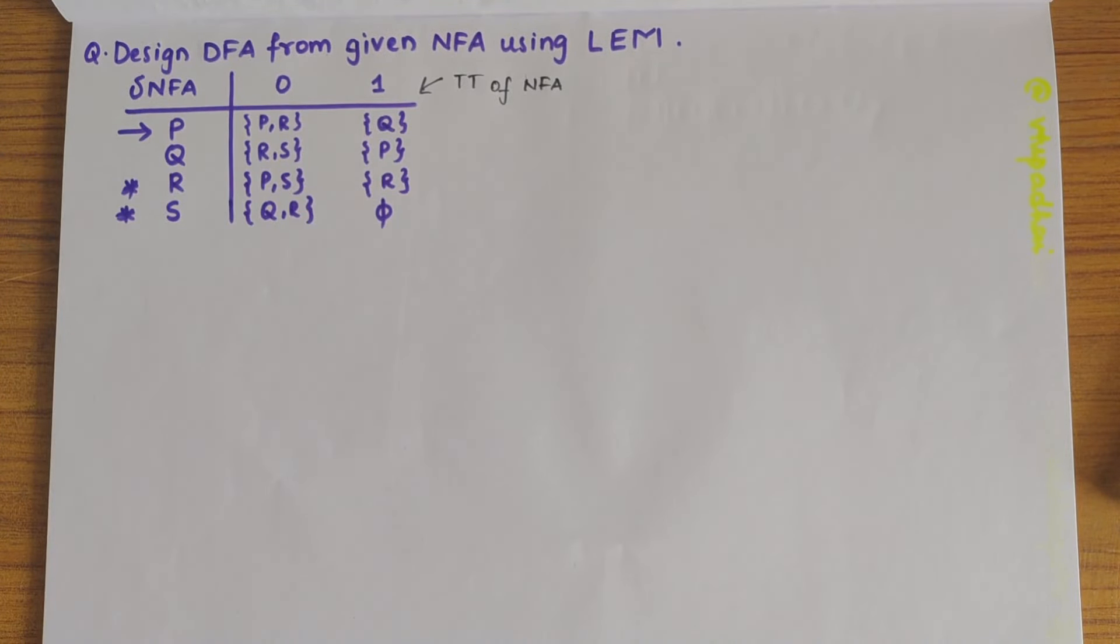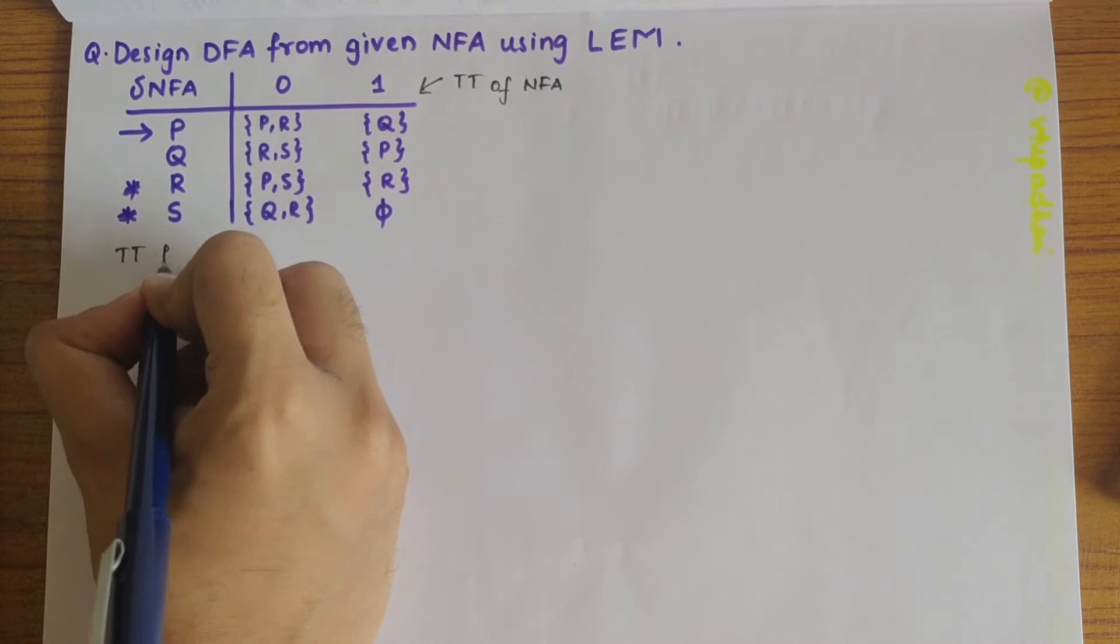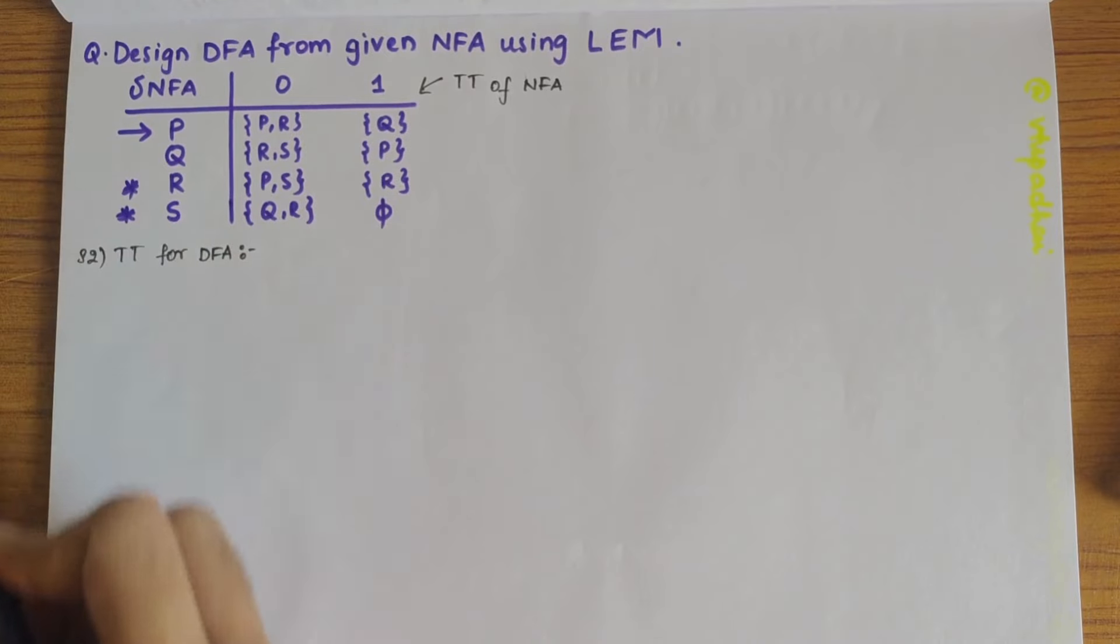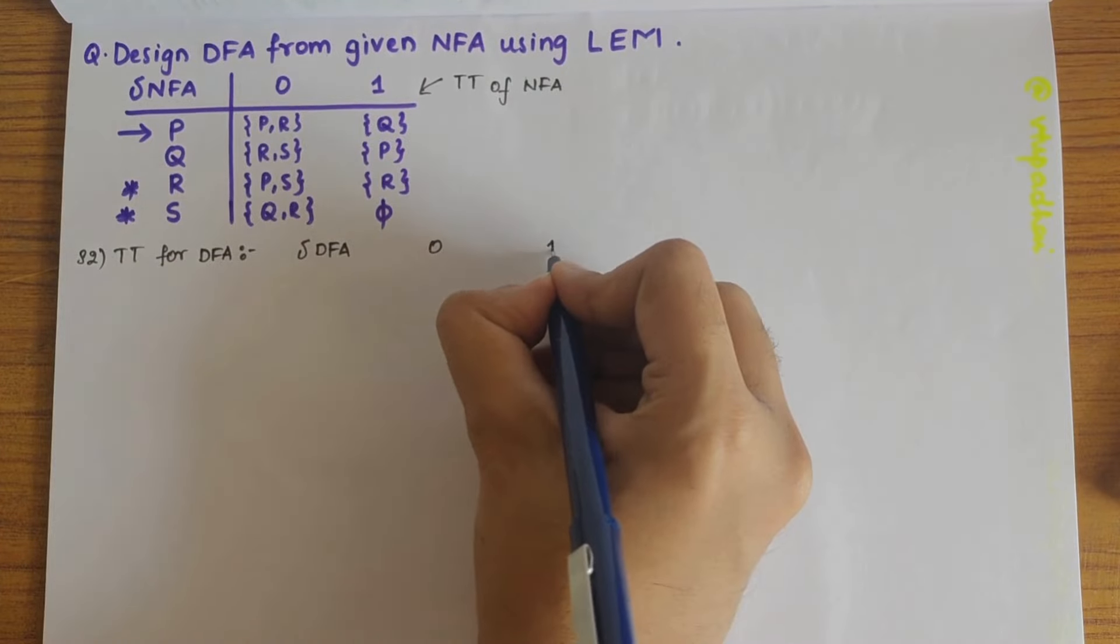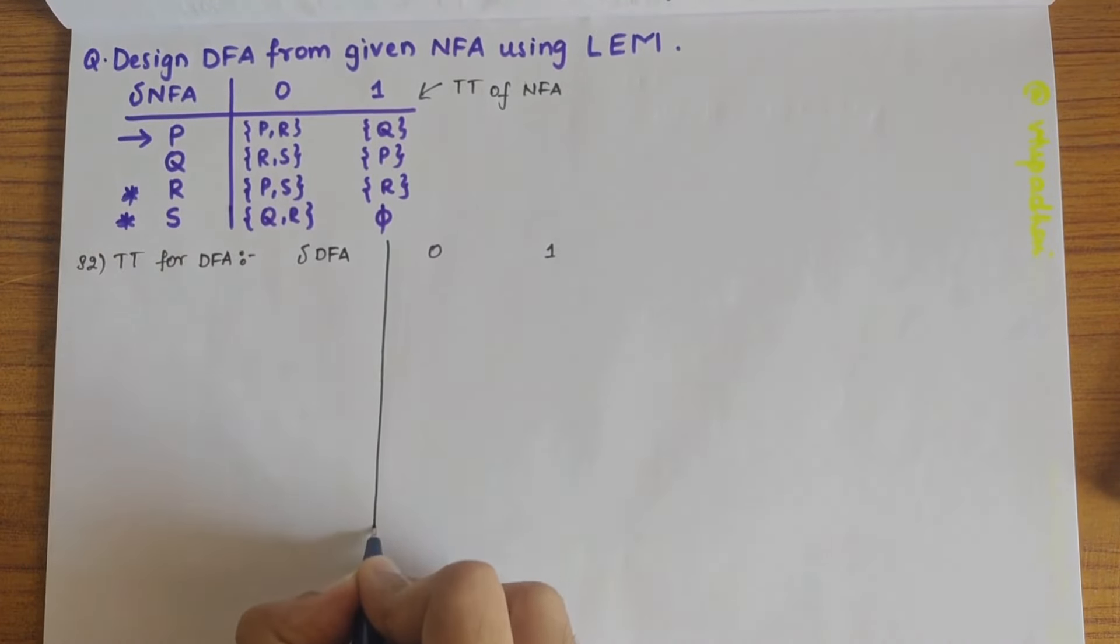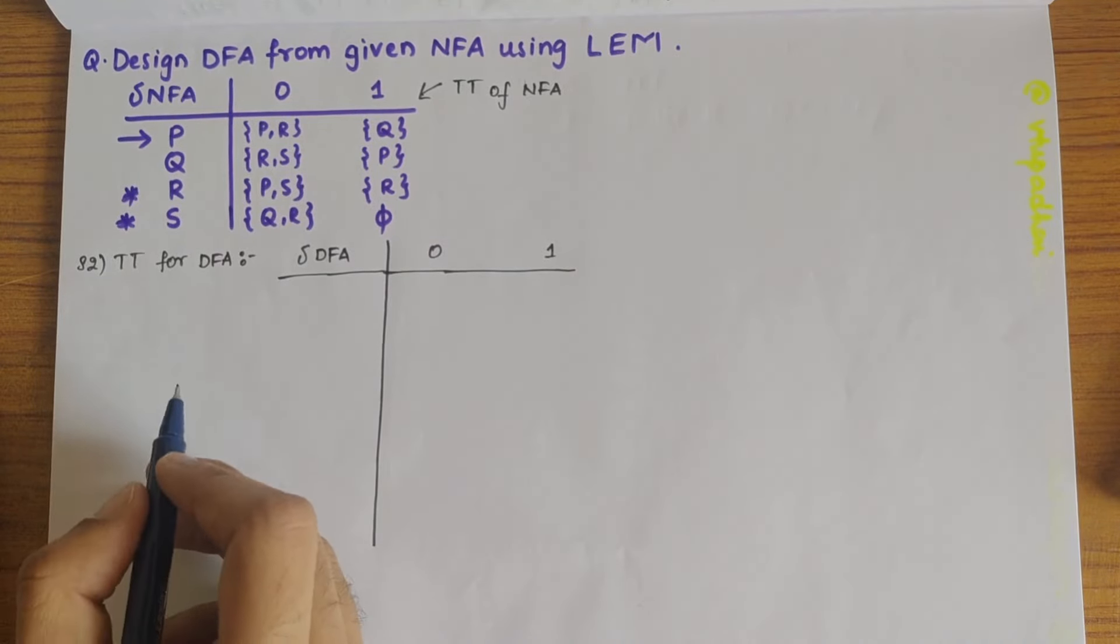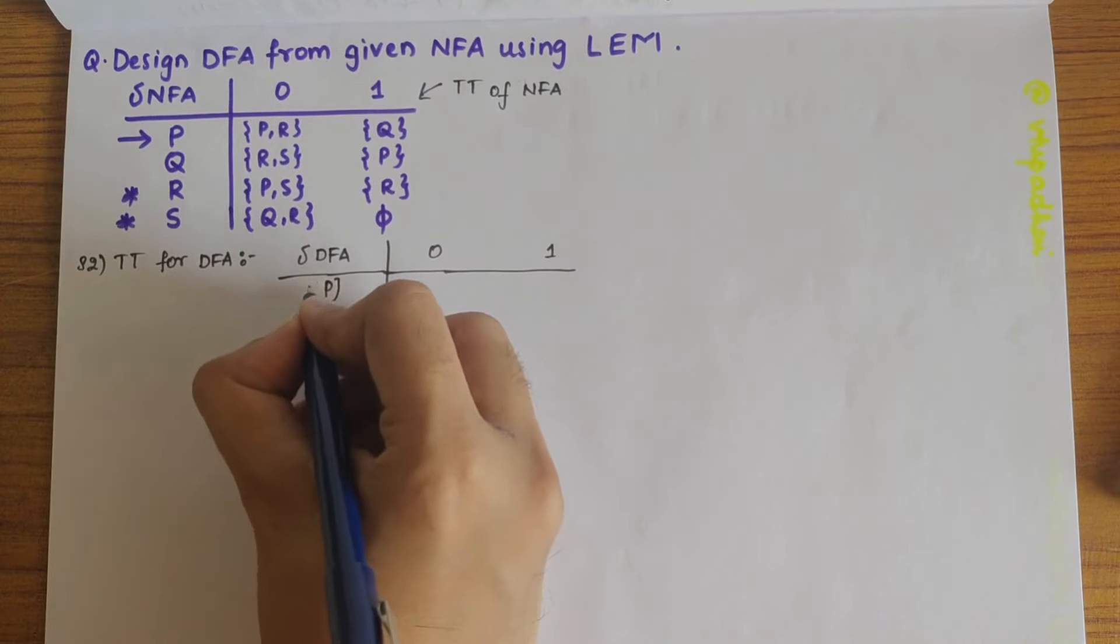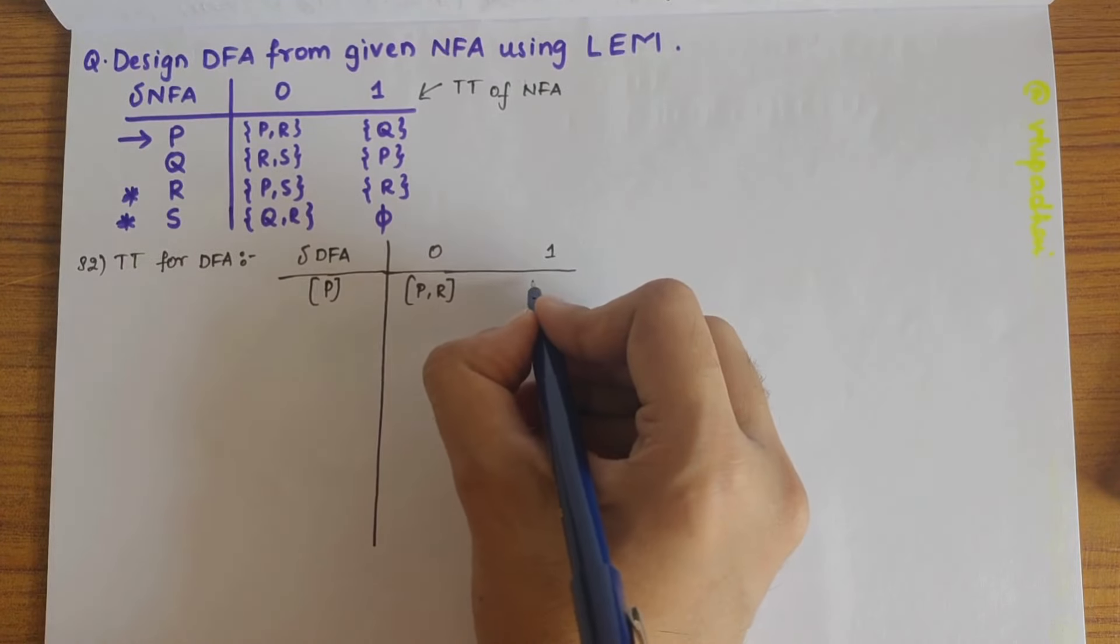So our second step would be to design the transition table for DFA. So transition table for DFA, step 2. So let's write DFA here, 0 and 1 here. So in lazy evaluation method, what we do is first take the initial state that is write P as it is and the states of P on 0 and P on Q as it is.